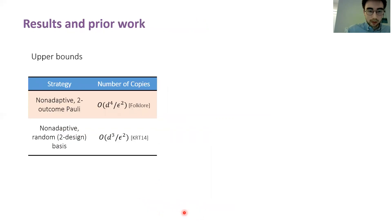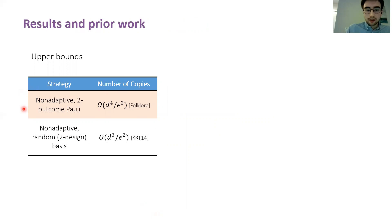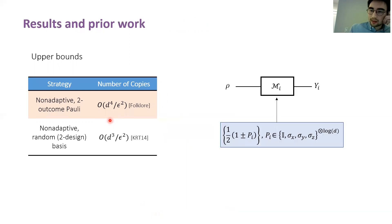Let me tell you about what was known about tomography in this measurement model. We have some upper bounds. The first one is essentially folklore — you can find it in Nielsen and Chuang, for example — which is that it suffices to take d-to-the-four copies of the state using a measurement strategy that's basically based on estimating the coefficients of the unknown state in the basis of Pauli operators. These measurements are just binary measurements.